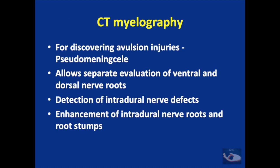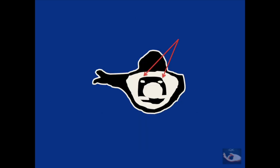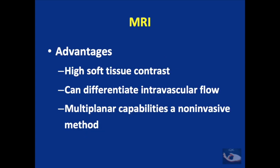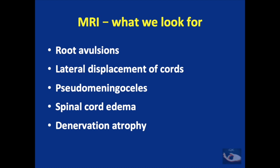CT myelography has definite advantages over conventional myelography, demonstrating the ventral and dorsal roots. MRI of the brachial plexus offers further advantages including higher soft tissue contrast, differentiation of intravascular flow and multiplanar capabilities. On MRI we can see root avulsions, lateral displacement of the cords, pseudomeningocele, spinal cord edema and even denervation atrophy.